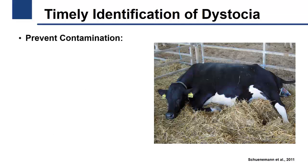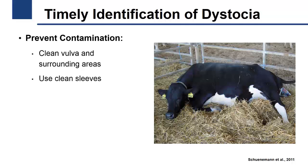In order to prevent contamination of the uterus, workers should clean the vulva and surrounding areas and use clean sleeves before assessing dilation and calf position. Personnel should always introduce lubricant solution before performing any manipulation of the birth canal or calf. If the birth canal is dilated, the calf is in a normal position, and the cow is still pushing, do not further disturb the cow and allow her more time.